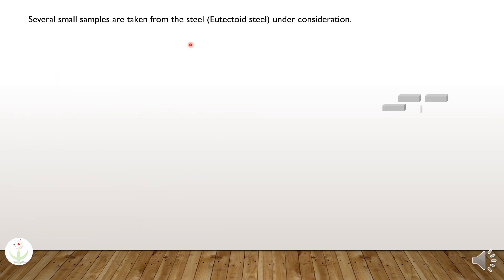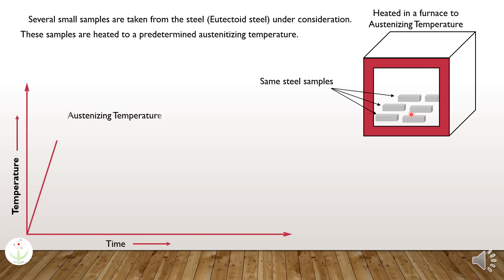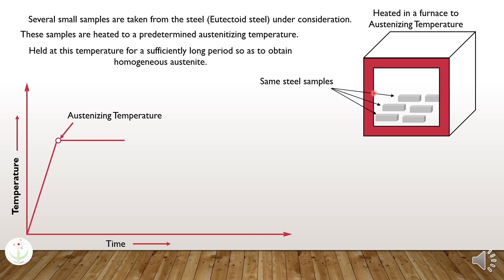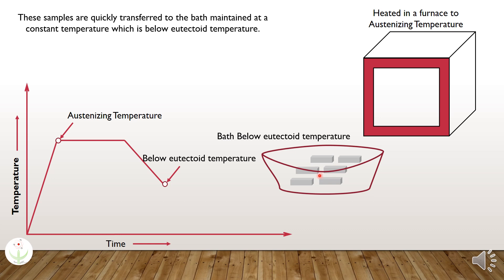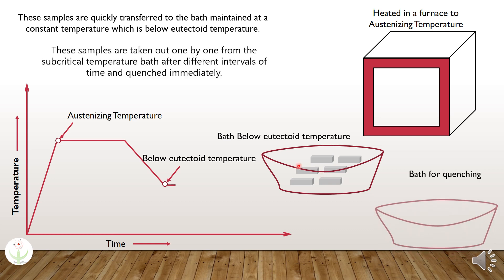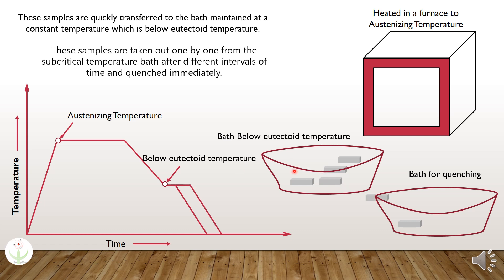First of all, several small samples are taken from the steel under consideration — let's say we have eutectoid steel. These samples are heated to an aptly determined austenitizing temperature and held at this temperature for a sufficiently long period of time so as to obtain a homogeneous austenite. After that, these samples are quickly transferred to a bath maintained at a constant temperature below the eutectoid temperature, and then the samples are taken out one by one from the subcritical temperature bath at different intervals of time.